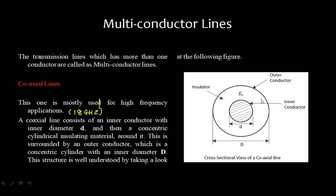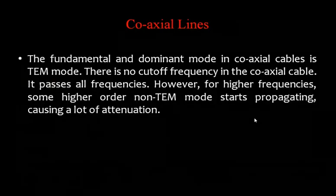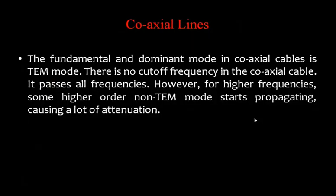The coaxial line has two conductors and a well-defined return path, which is why it supports TEM mode. There is no cutoff frequency in a coaxial cable — it passes all frequencies. However, for frequencies above 18 GHz, higher-order non-TEM modes start propagating, causing significant attenuation, which is why coaxial lines are practically limited to 18 GHz.